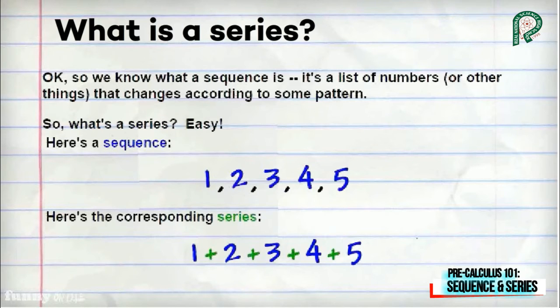The given sequence is 1, 2, 3, 4, 5. Then, the corresponding series is 1 plus 2 plus 3 plus 4 plus 5. In short, we just replace commas with plus signs.